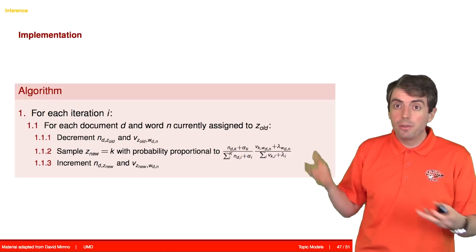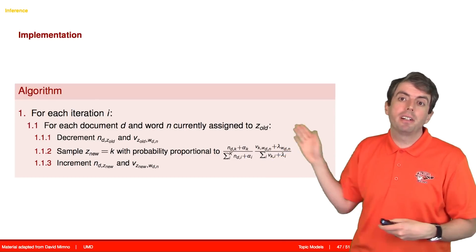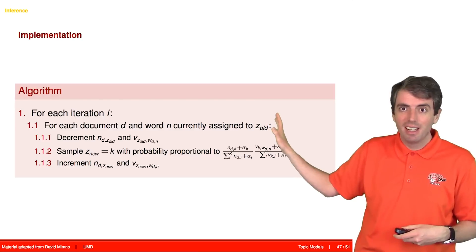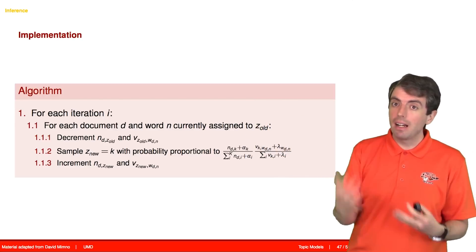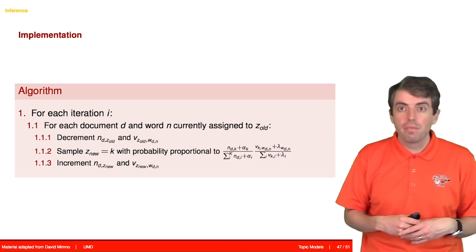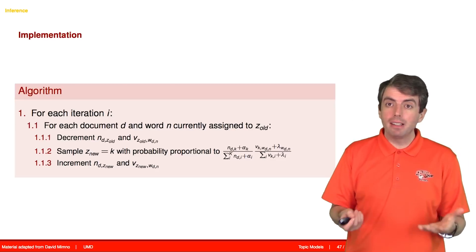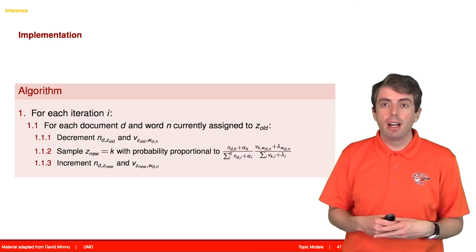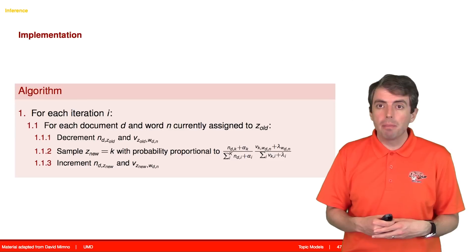So even though you now should be able to implement this on your own, I encourage you not to do that, except to understand how it's working. If you actually use this in practice, you should use an existing implementation. I recommend trying first Mallet, which is a Java-based implementation of Gibbs sampling for topic models.